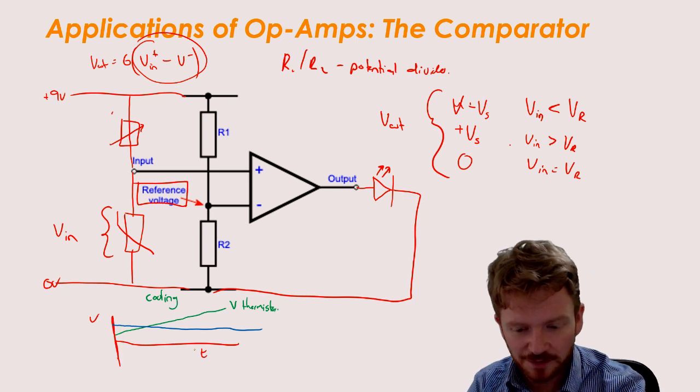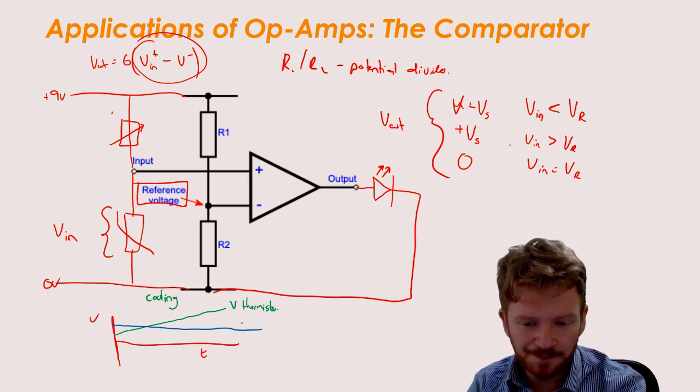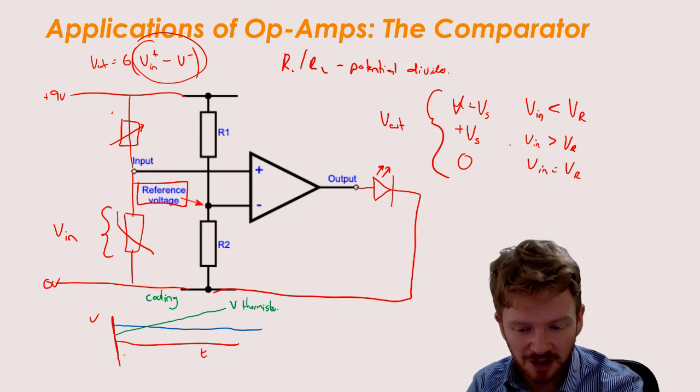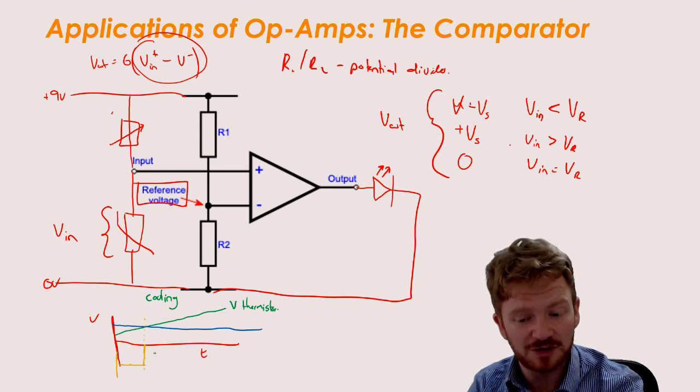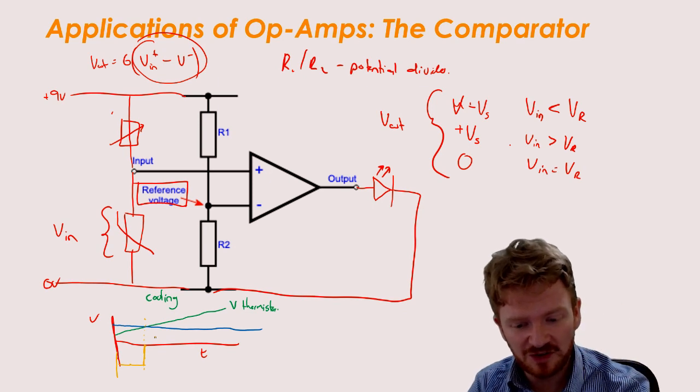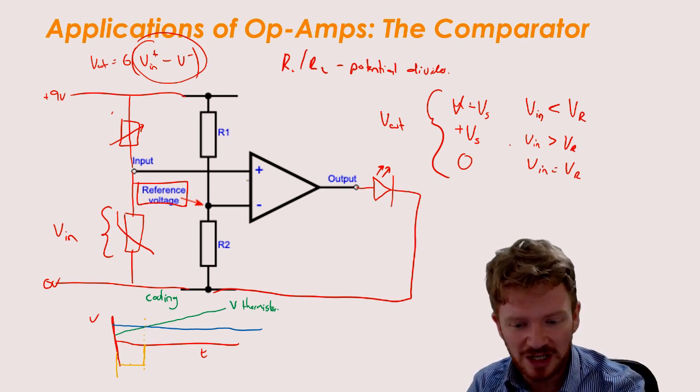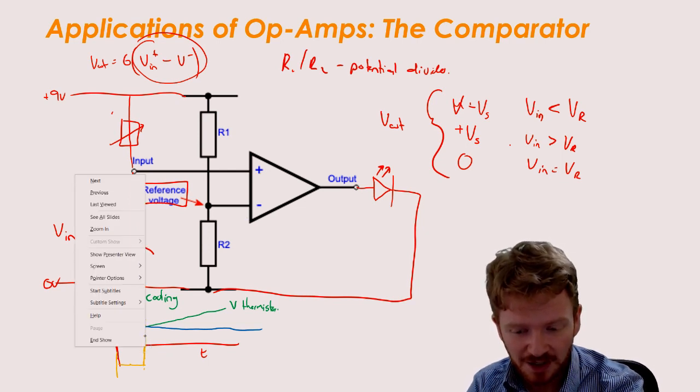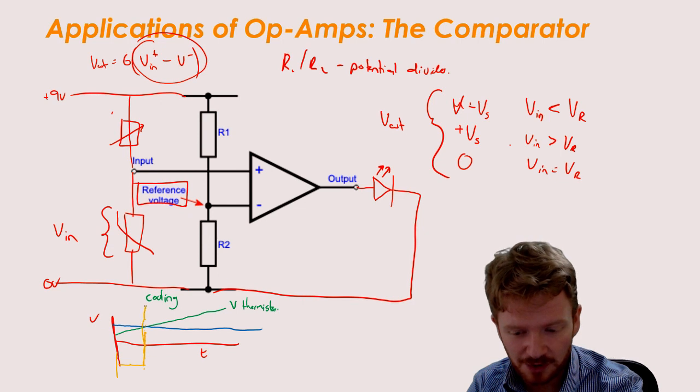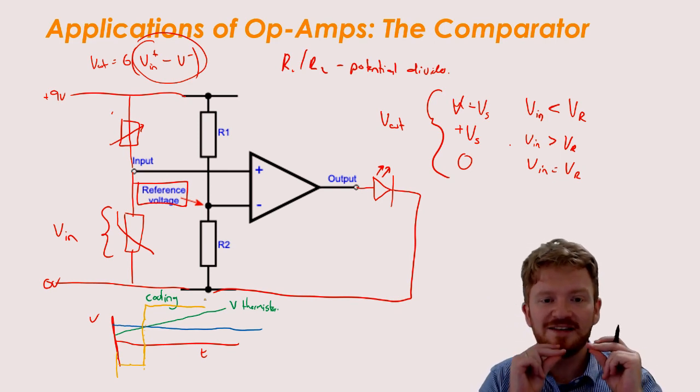So if we think about V_out, well, at the start, voltage across the thermistor is less than the voltage across the reference. Now that means that my V_out is going to be completely negative. And it's going to stay completely negative until the two are equal, in which case V_out becomes zero. And as soon as the thermistor voltage is larger, as soon as the non-inverting input is larger than the inverting input, it's going to shoot up to the positive of the supply voltage and then just stay at this same high level. So I get this instant switch.